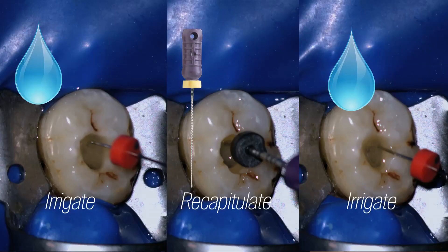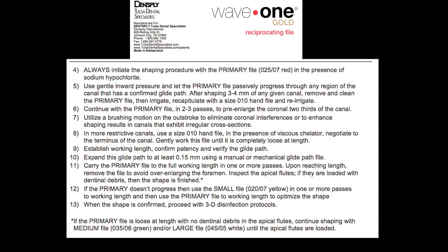After irrigation, we take the file that we established the working length with and ascertain that we have not blocked ourselves. In other words, we recapitulate. After that we irrigate again, and then we go back with WaveOne Gold for another three millimeters in an amplitude stroke down apically, and repeat exactly the same steps.